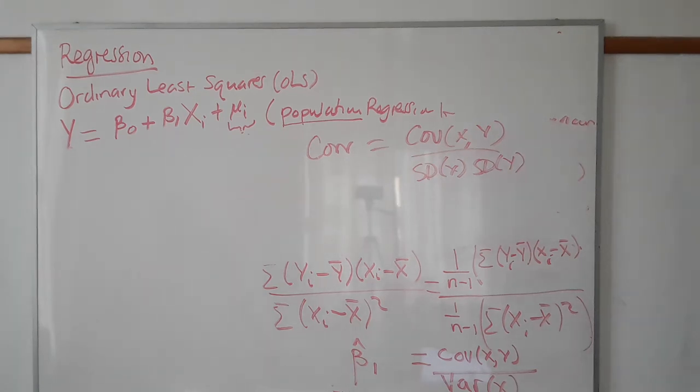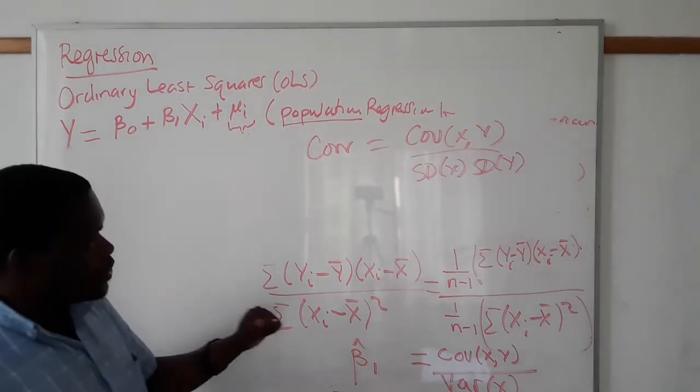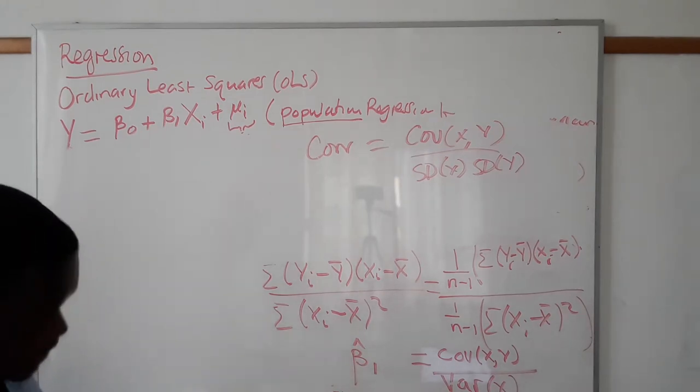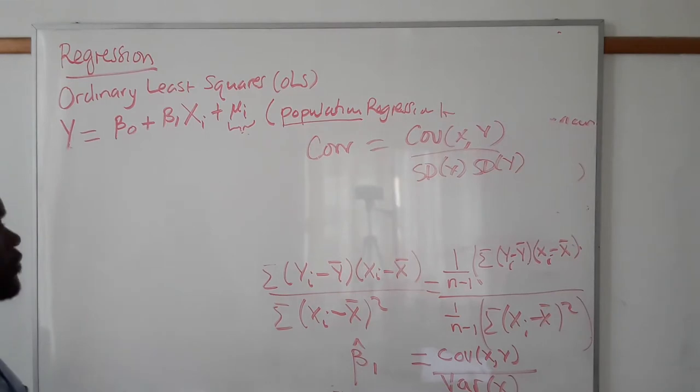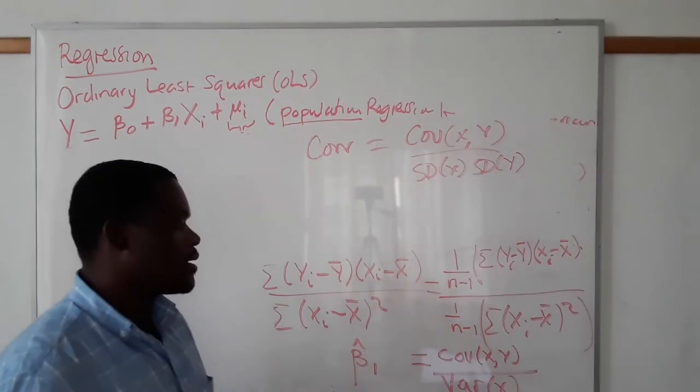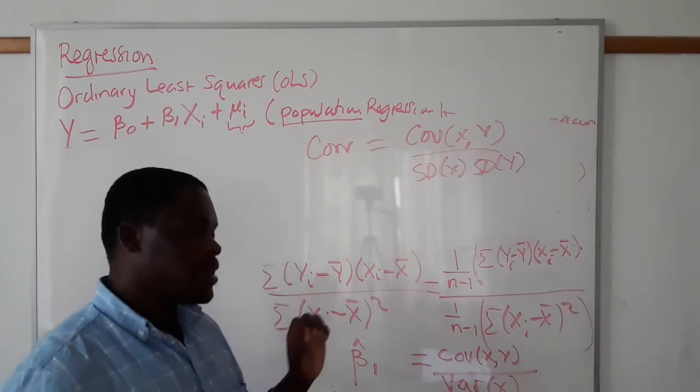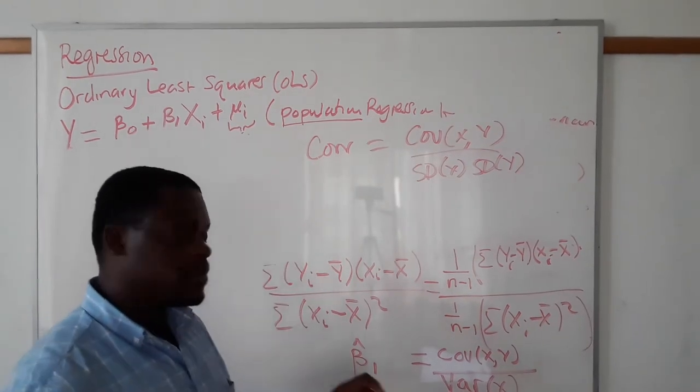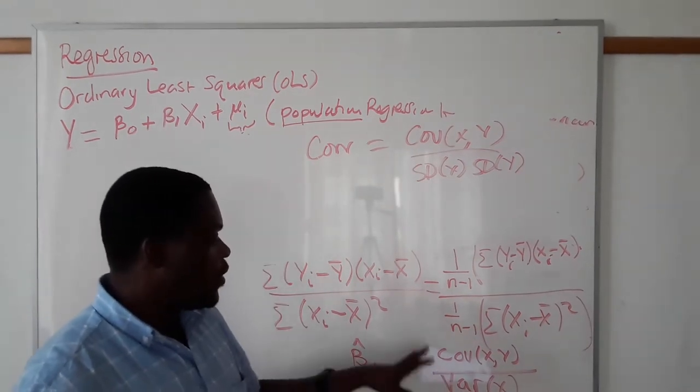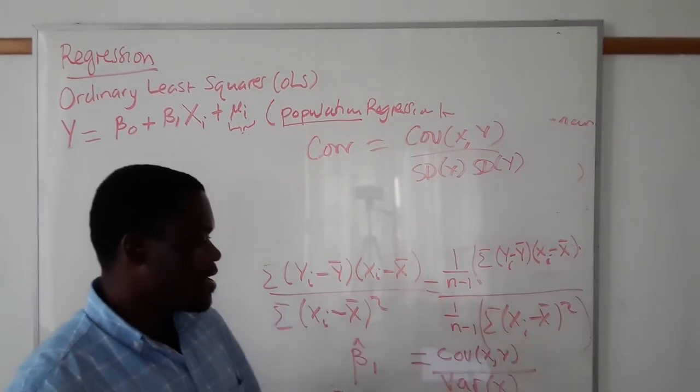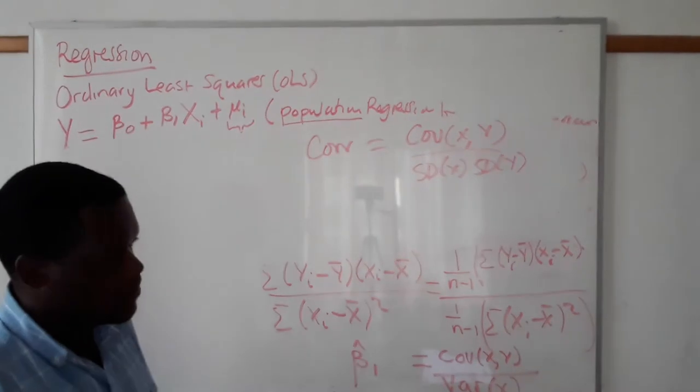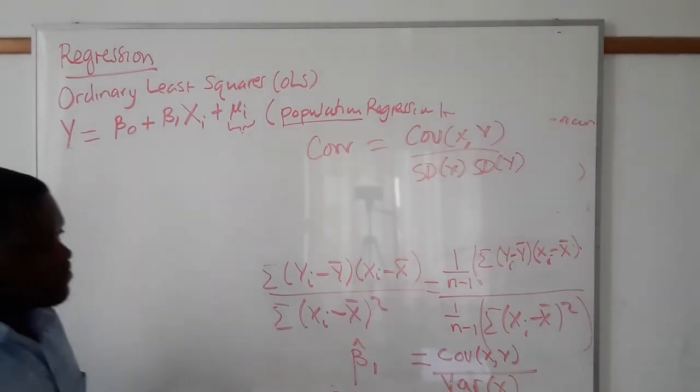All right, so now we have shown that we can find our β₁ from our knowledge of the relationship between the covariance of X and Y relative to the variance of X. Now, the same knowledge can be used to help us see how this particular relationship can be written in terms of the correlation.